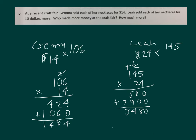So Leah makes $3,480. Gemma makes $1,484. When we were asked how much more, we take $3,480 and subtract $1,484, and we would get the amount that they made that was more.